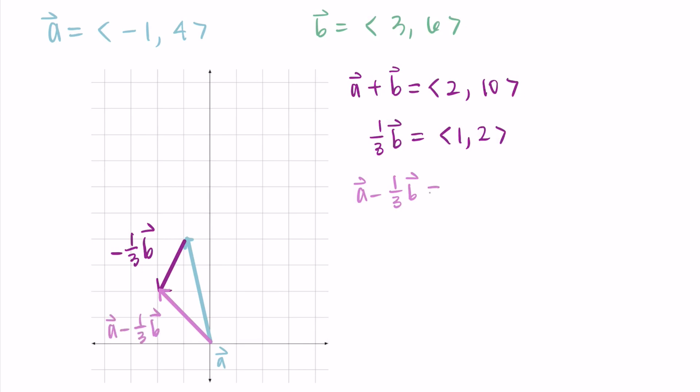And I'm seeing that my vector goes two to the left. So negative two on the x and two up. So positive two on the y. So my resulting vector for a minus one third b is negative two, two, which matches what we got algebraically.